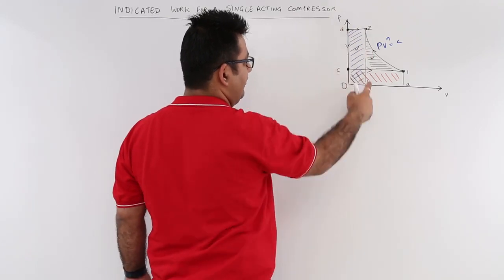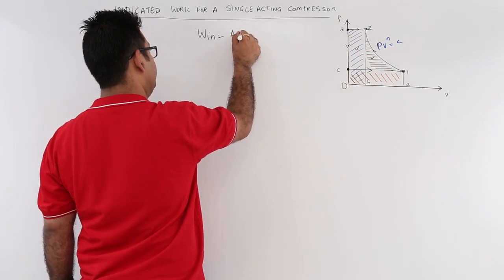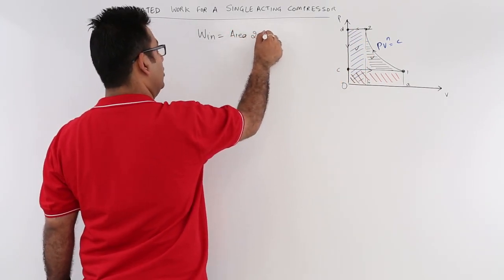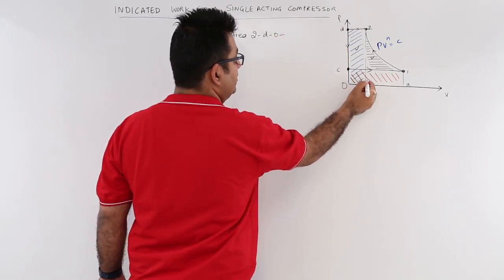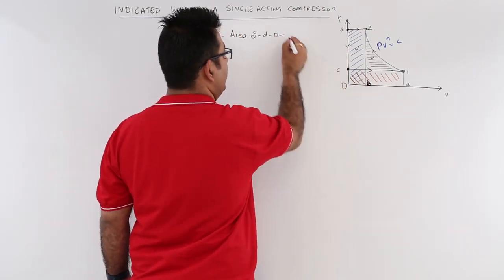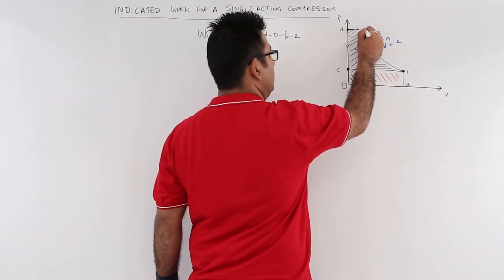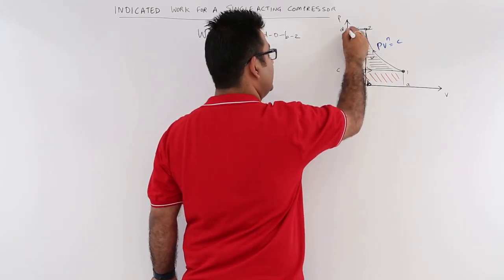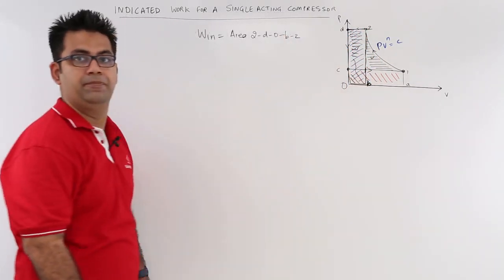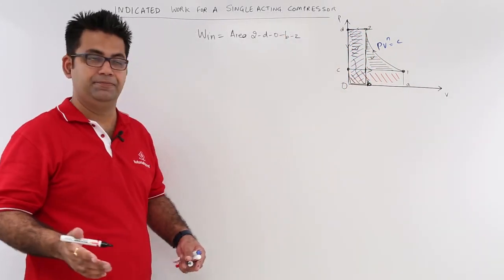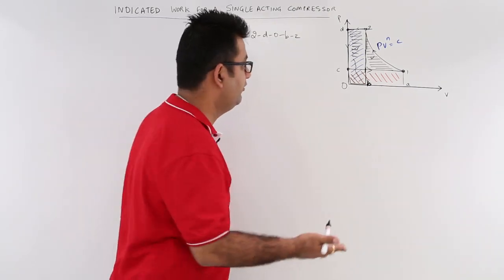So this area, first of all, let us have a look at this much area. So this is area 2D0B, this is B, and then 2 back. So this area, this complete area, this entire area, this is what we have taken. This is the area. So what is this area? This area is the flow work during the delivery stroke.